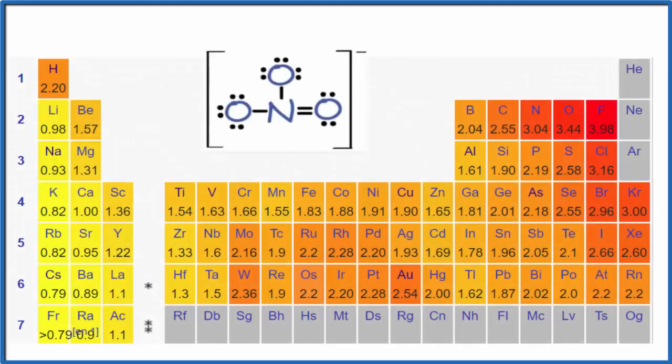The question is whether the nitrate ion, NO3 minus, is polar or nonpolar. The short answer is that it's nonpolar. Even though it's an ion, the ion itself doesn't really have a positive or negative side to it. So it's a nonpolar ion.